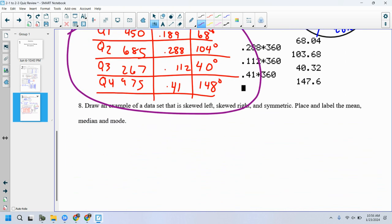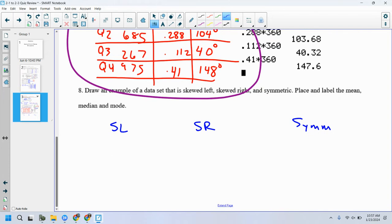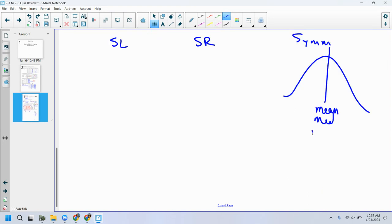Draw an example of each data set that is skewed left, skewed right, and symmetric. Okay. Skewed left, skewed right, and then symmetric. Symmetric is easiest to do. Okay. So let's draw symmetric. Perfect bell shape, right? Where's the mean, median, and mode? Right down the center, right? Mean, median, and the mode right down the center.